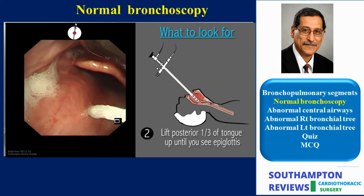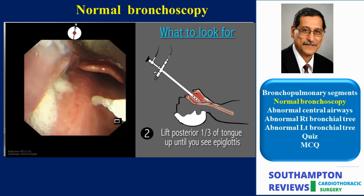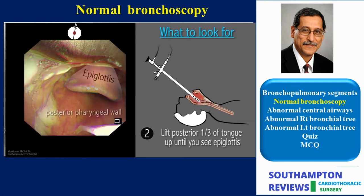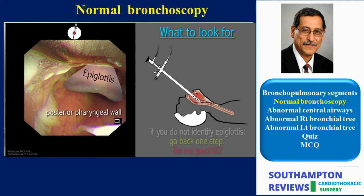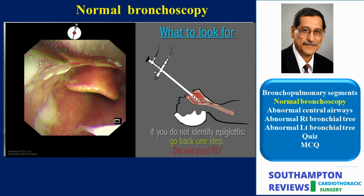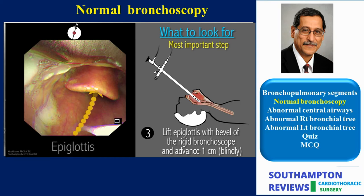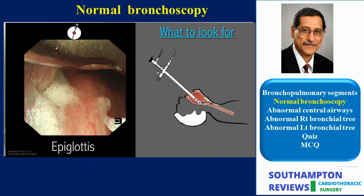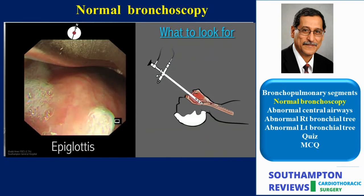The next step is crucial to entering the trachea, so pay particular attention to it. Lifting up the posterior third of the tongue exposes the epiglottis. Next, the bevel of the rigid scope is introduced for a centimetre or so under the epiglottis, and the latter is lifted up while keeping the scope in the median line.